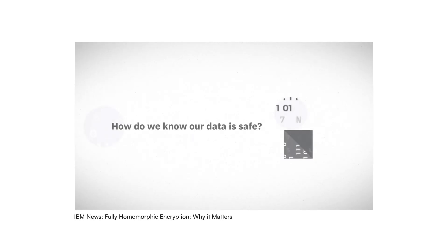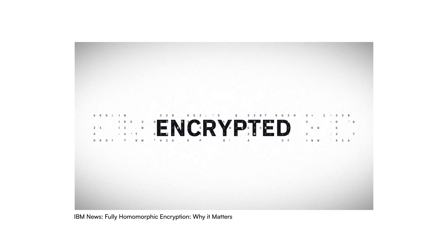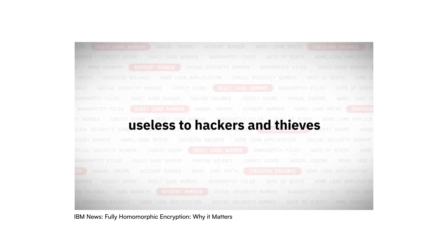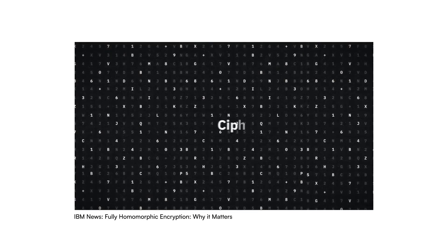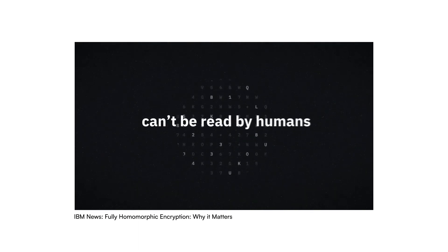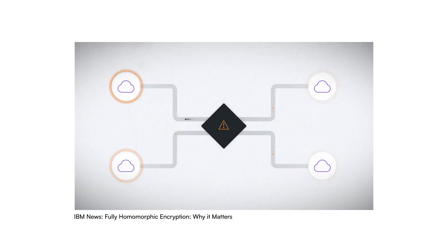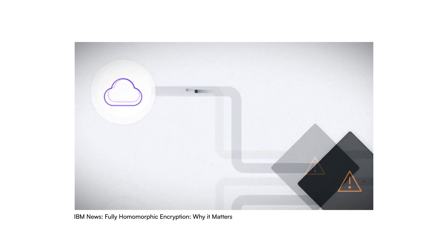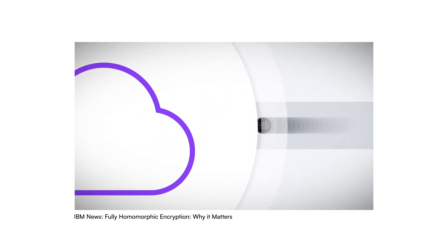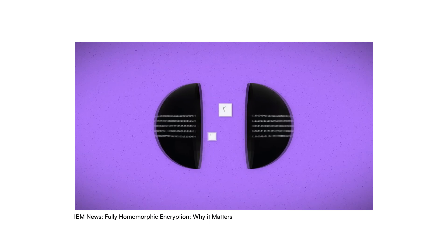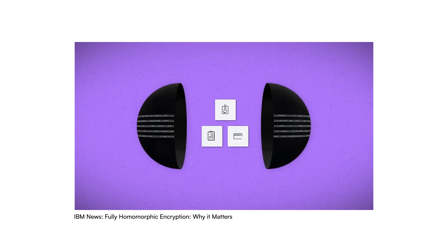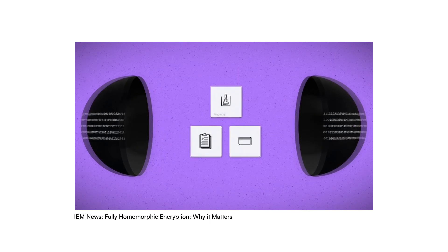How do we know our data is safe? Well, most of the sensitive data we share is encrypted. Encrypted data is useless to hackers and thieves as it's translated into complex code or ciphertext that can't be read by humans. But while encryption safeguards our data as it's being stored or transferred, the data must be decrypted — translated back into clear text — to be processed.